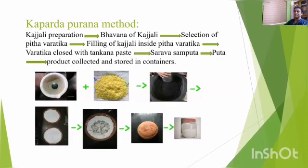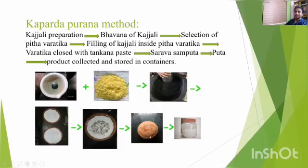The second type is the Kapartha Purana method. Here also, initially we prepare the Kajali, then Bhavana of Kajali in any liquid medium. Then, selection of Pitha Vardhika — among the types of Vardhika, Pitha Vardhika is the Shreshtha. The Kajali is filled inside the Pitha Vardhika, which is then closed with Tankana paste, and Sharava Samputa and Agni will be given. For example, in the preparation of Lokanatha Rasa, Parada and Gandhaka are made into Kajali, filled along with Shankha and Kapardika into a Sharava, Sharava Samputa is done, and Agni is given for a stipulated period to attain proper Pagam. This is the final product.